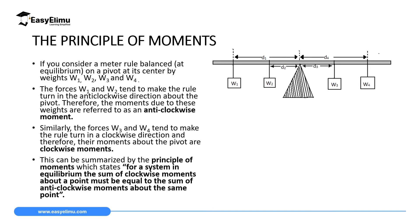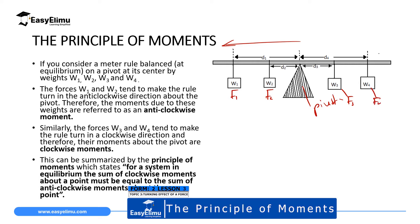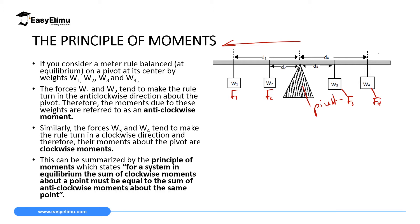The principle of moments explains a scenario where you have more than one force acting on either side of the pivot. If you have a pivot here, on the left-hand side we have forces F1 due to W1, F2, then F3 and F4. Each force — W1, W2, W3, W4 — has a perpendicular distance to the pivot.